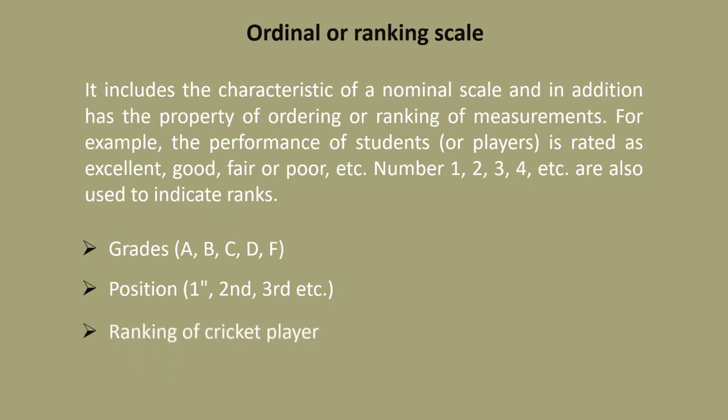Ordinal scale examples include ranking of cricket players and socioeconomic status: poor, middle class, rich. It is a nominal scale but order exists in it. We use one, two, three as the order.